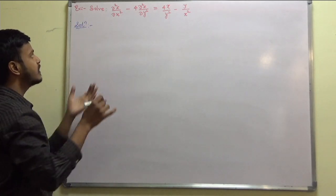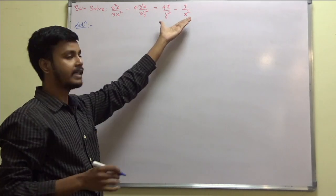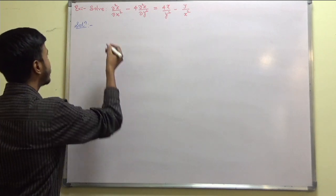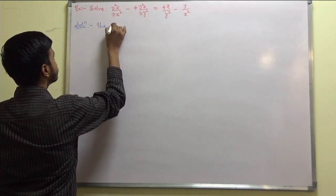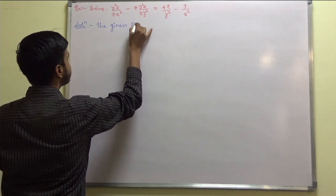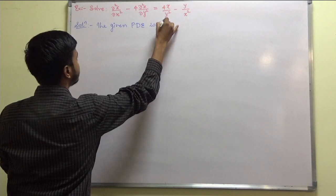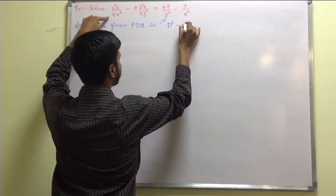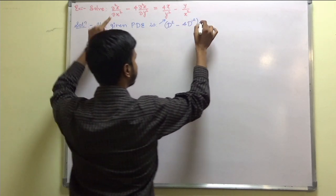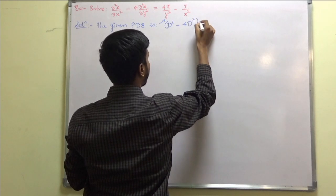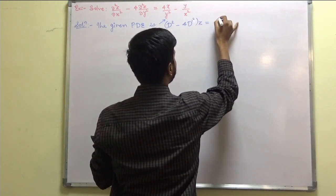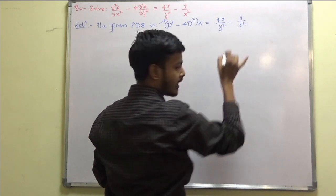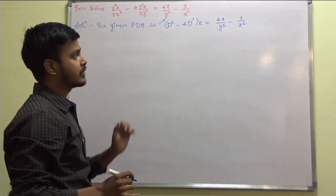As you can see, we are given a problem to solve. We have the right-hand side not equal to 0, so we have to find CF as well as PI. To find out CF, you have to start with the given PDE and then write it in terms of operator D. This is D² minus 4D'² operating on Z equal to 4x/y² minus y/x². This is the problem we have.